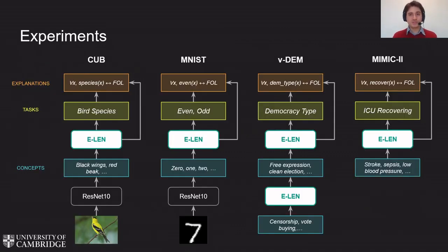In terms of experiments, we tested our method on four different datasets: two image datasets, CUB and MNIST, then we implemented a cascade of ELENs for the VDEM dataset, and finally we applied ELENs on MIMIC2, a large clinical dataset.